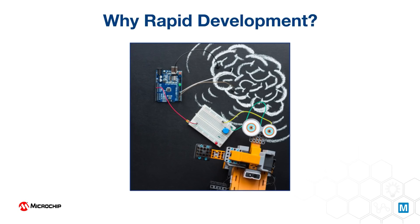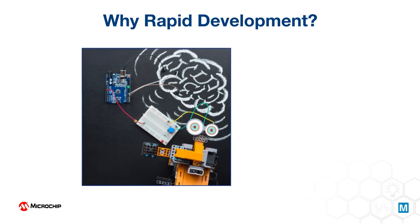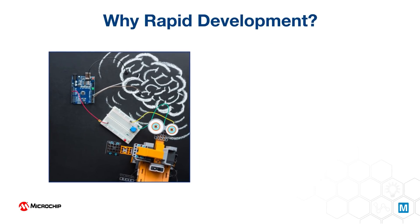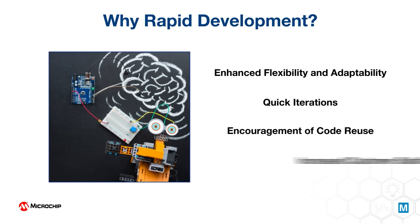Rapid Development is an agile concept that focuses on rapid prototype releases and iterations. In contrast with the waterfall method, the development process evolves around continuous feedback and improvements. Developers can adjust quickly during the development process, and these quick iterations reduce development time and speed up final product delivery.